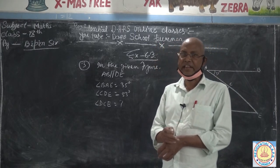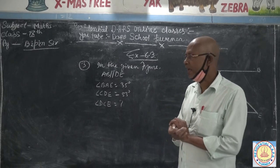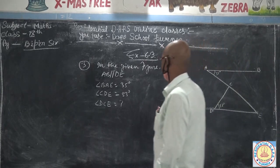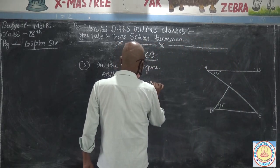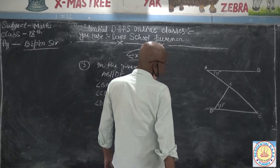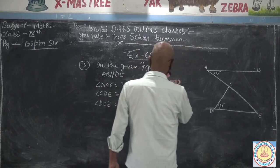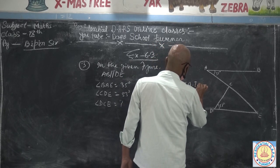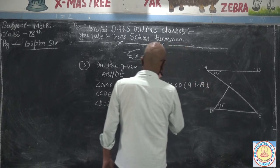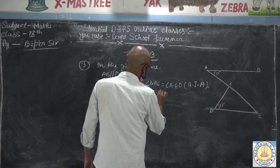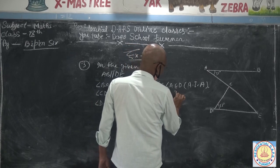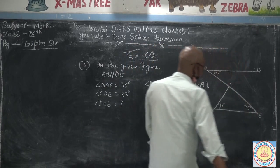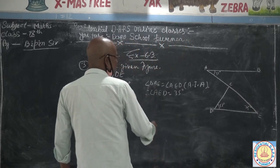then alternate interior angles are equal. So angle BAE is equal to angle AED. Alternate interior angles — so angle AED is equal to 35 degrees.